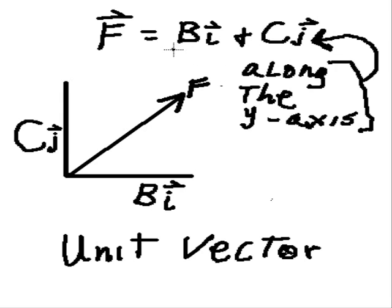So, you can tell immediately that the B i vector is what we normally refer to as the Fx vector. And C j is the Fy vector.